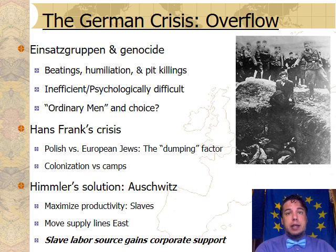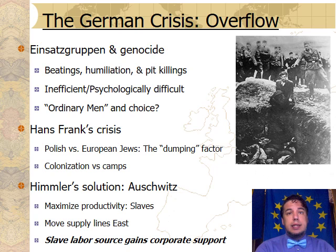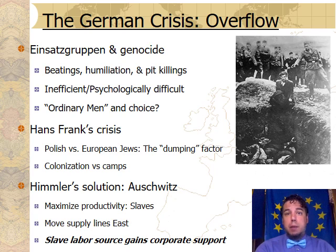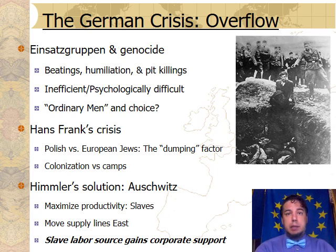The first group we need to understand when it comes to the Holocaust is a group called the Einsatzgruppen. The Einsatzgruppen were essentially death squads that followed German armies into Eastern Europe and were in charge of killing Jews, particularly in small villages and communities. The way they carried out their mass murder was to take Jews out into the countryside, have them dig large pits, and then kill them one by one, throwing their bodies into the pits.